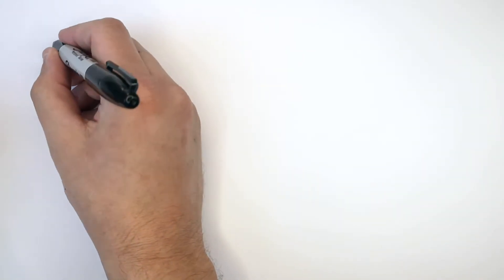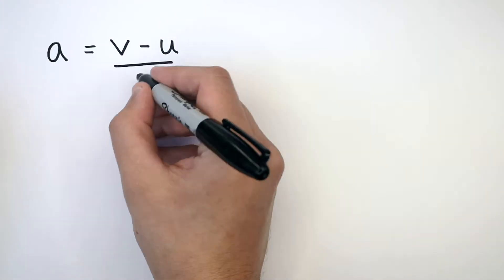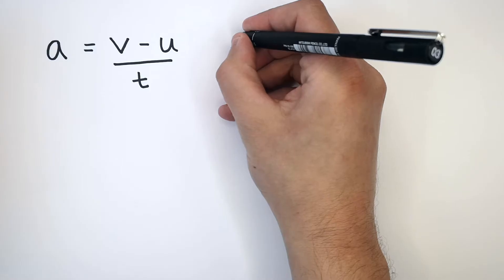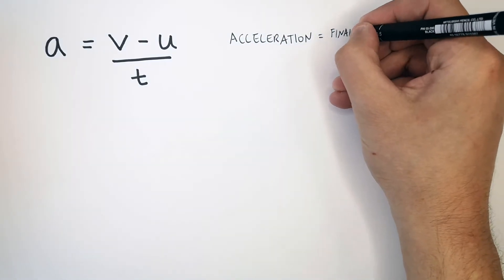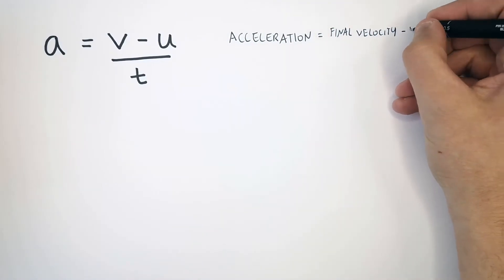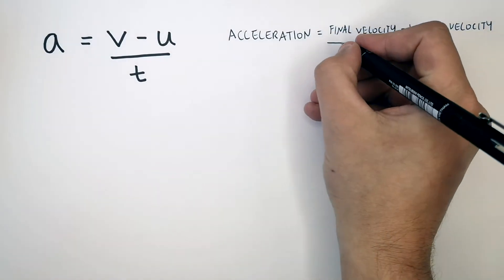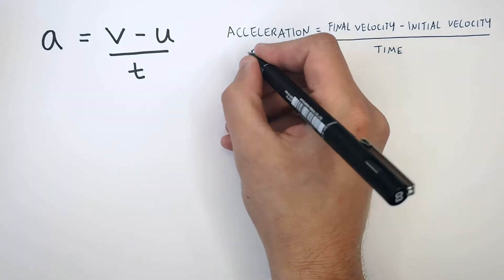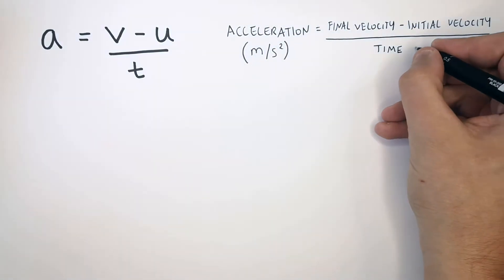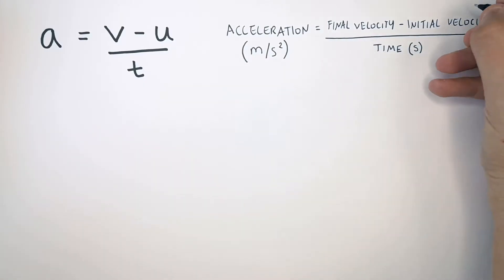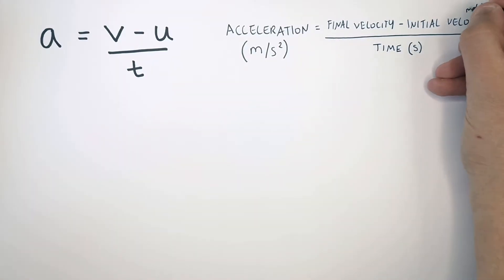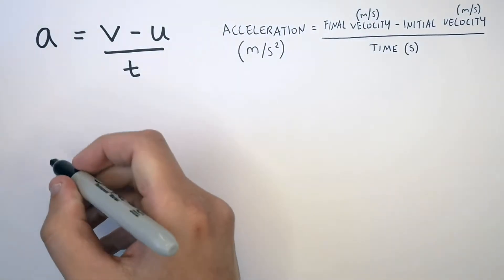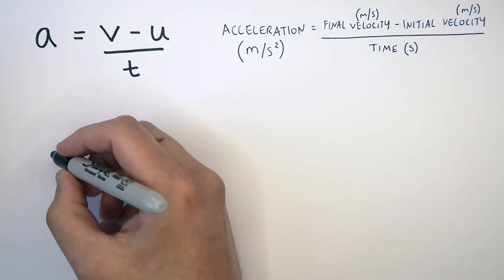The equation we're going to be using today is a equals v minus u over t. So a equals v minus u over t means acceleration equals the final velocity v, minus u the initial velocity, divided by t. The units are: acceleration is meters per second squared, not meters per second, and the unit for time is seconds. Initial velocity is meters per second, and final velocity is meters per second. Final velocity minus initial velocity is the same as saying the change in velocity.